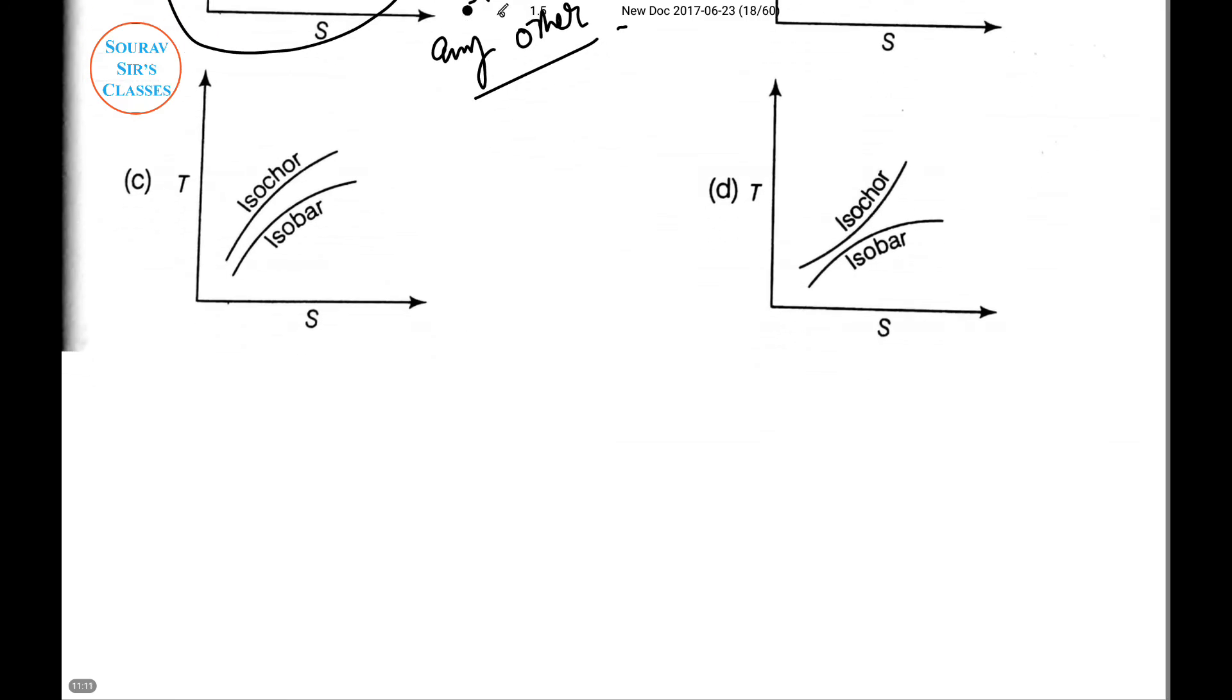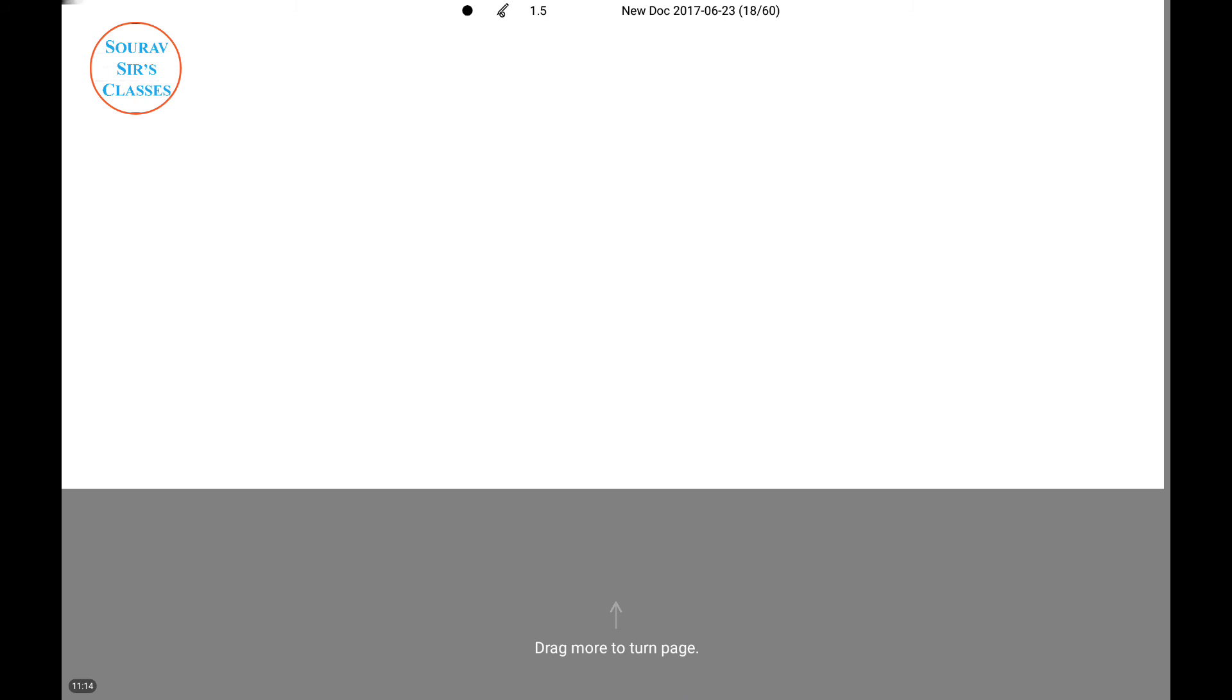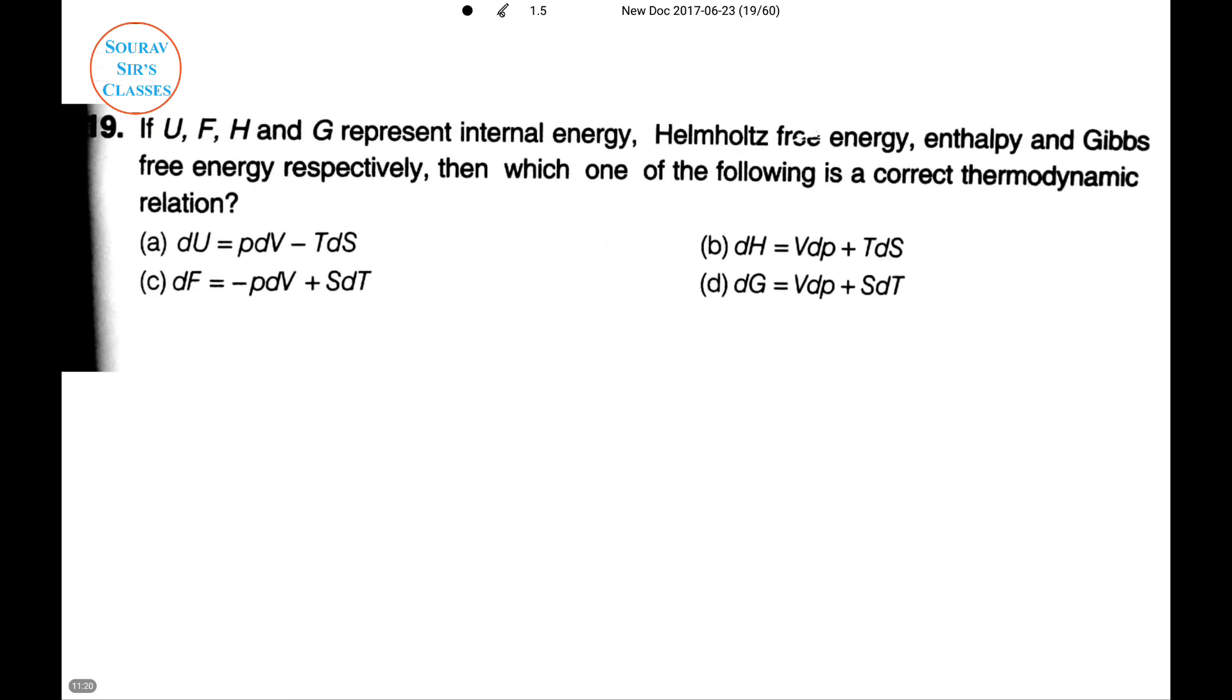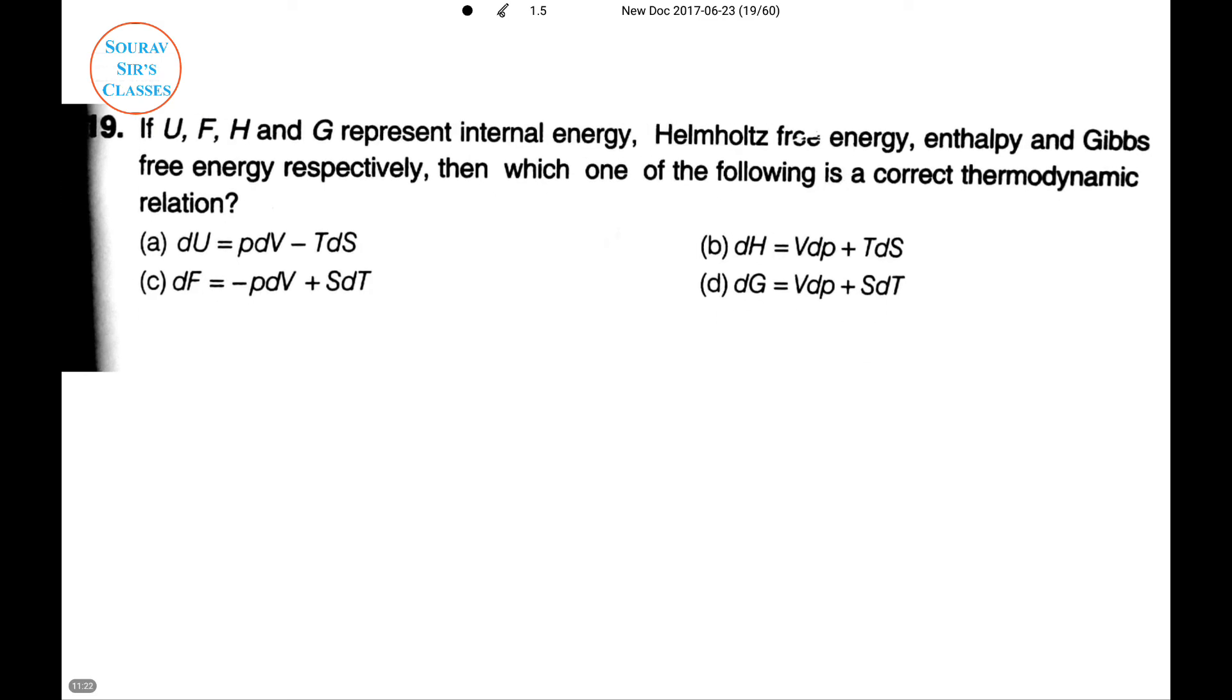This will be the last question for this video. The other questions will be solved in the next videos. If U, F, H, and G represent internal energy, Helmholtz free energy, enthalpy, and Gibbs free energy respectively, then which of the following is a correct thermodynamic relation? In my graduation days, thermodynamics was one of my favorite areas, but this question is relatively easier.